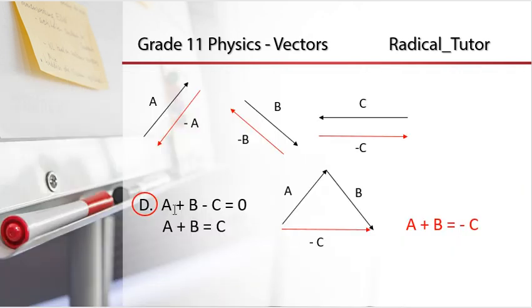Choice D: A + B - C = 0, which means A + B = C. Let me double check this. Drawing vector A plus vector B: vector A's tail connects to vector B's head. But this gives us negative vector C, not vector C. So A plus B equals negative C, not C. This statement is incorrect, so D is the answer.